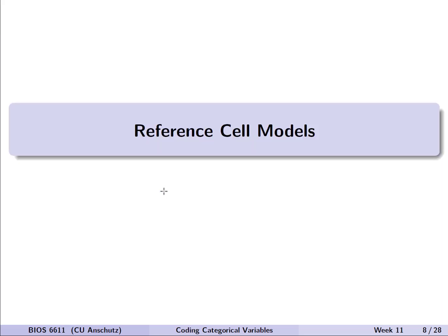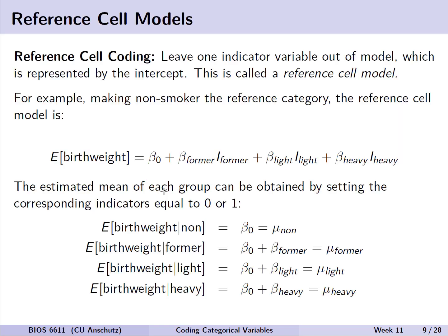This leads us to the idea behind reference cell models. With reference cell coding, we leave one indicator variable out of the model, and this will ultimately be represented by our intercept. For example, if we make non-smoker the reference category, our reference cell model for the expected birth weight would be: beta-naught as intercept, plus beta-former times i-former, plus beta-light times an indicator for a light smoker, plus beta-heavy times an indicator for a heavy smoker.